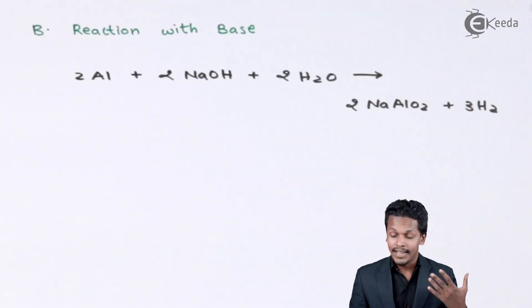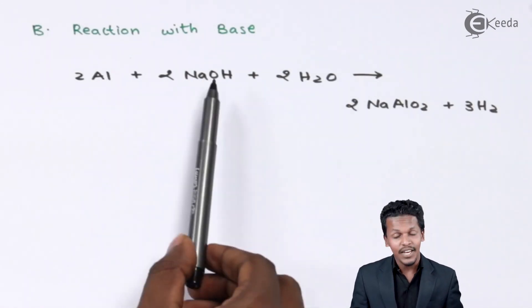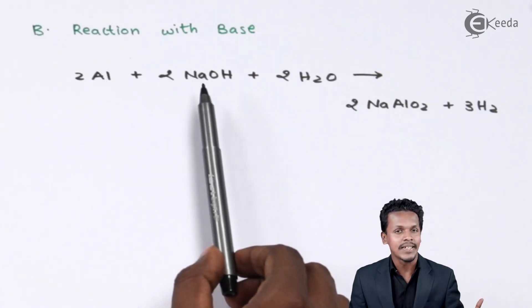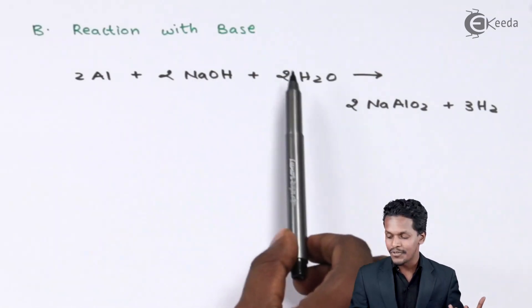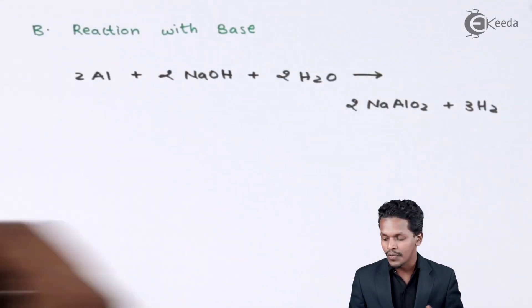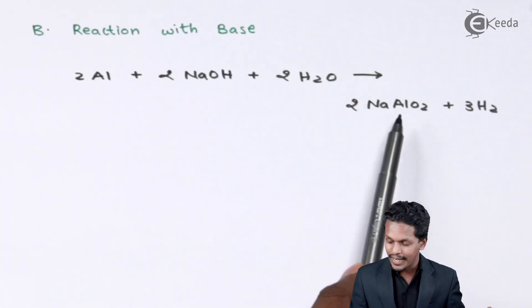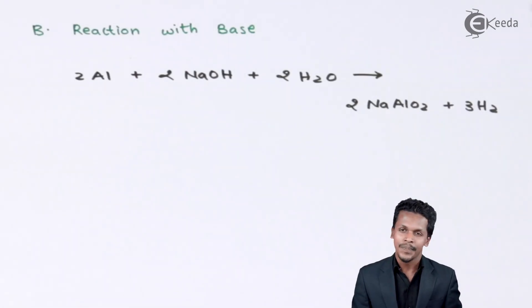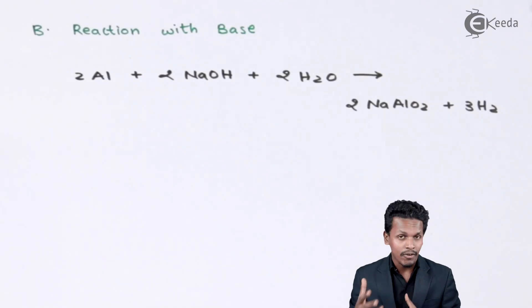This is the reaction where basically aluminium is being treated with a base like sodium hydroxide. In this case, two moles of aluminium is reacted with two moles of sodium hydroxide so as to obtain two moles of sodium meta-aluminate, that is NaAlO2, along with three moles of H2. This NaAlO2 is basically the main ingredient that we can prepare during this process.